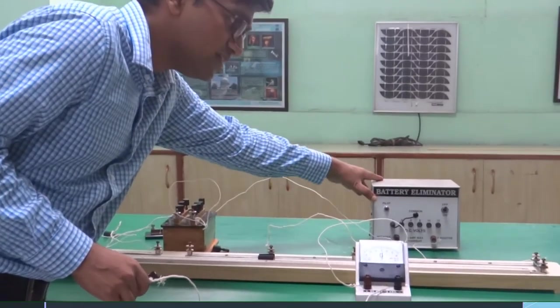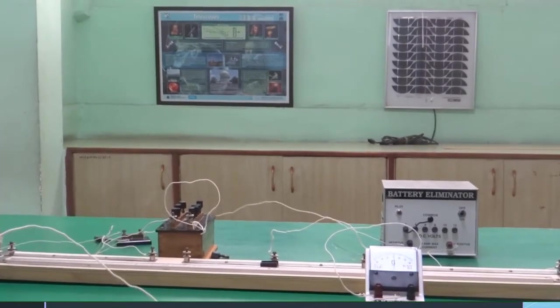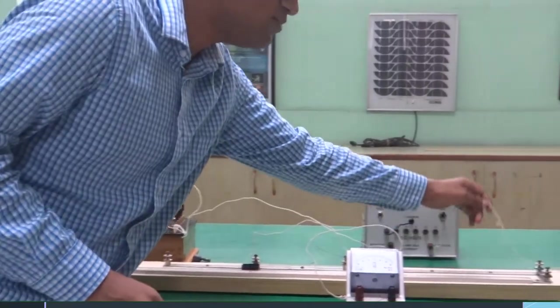This is the battery eliminator, the DC source. From here, in series we have attached a key and we have attached it to one end of the meter bridge, and the positive terminal goes to the second end.